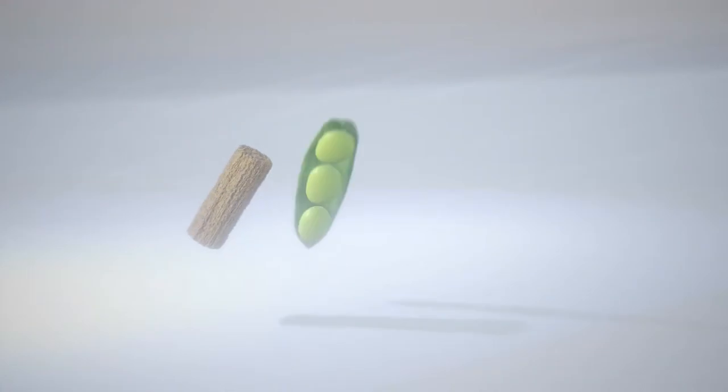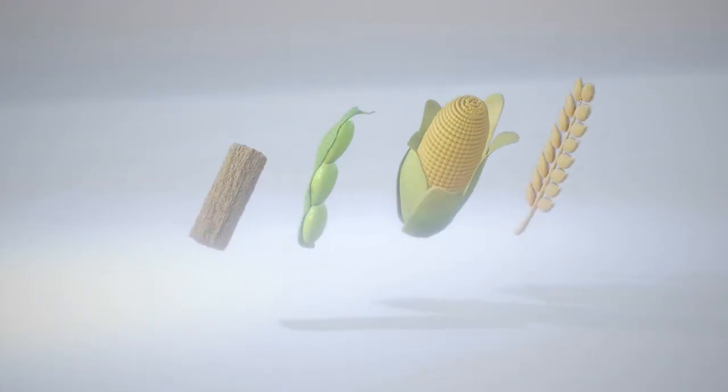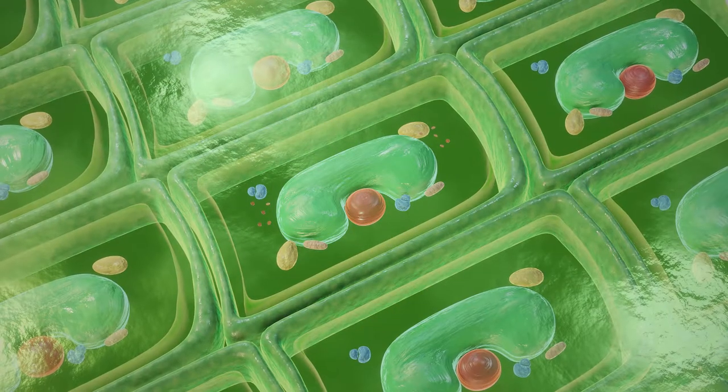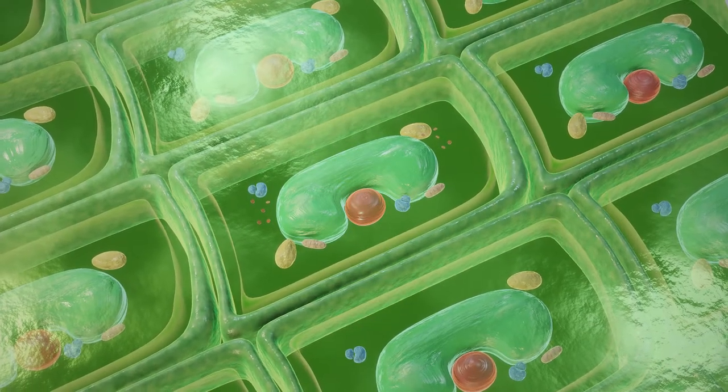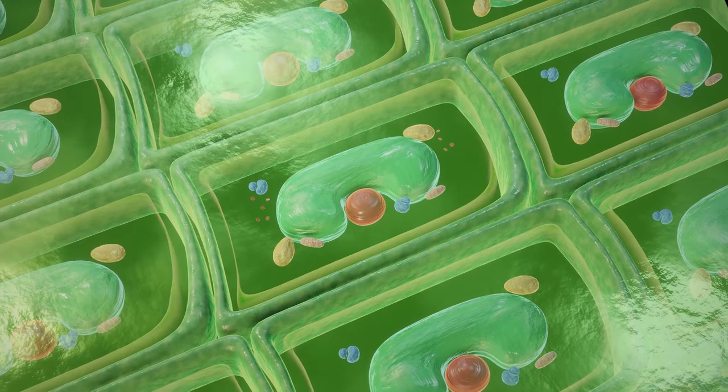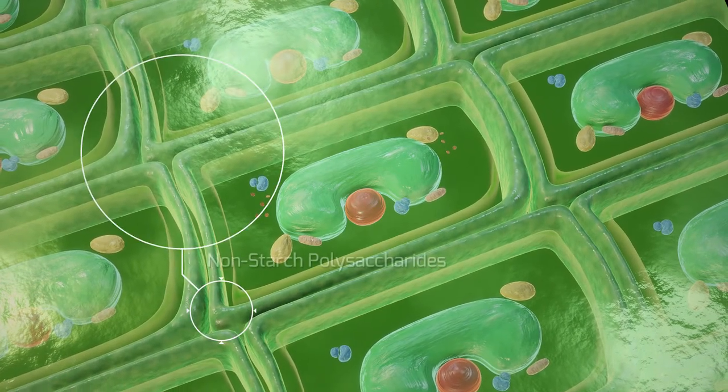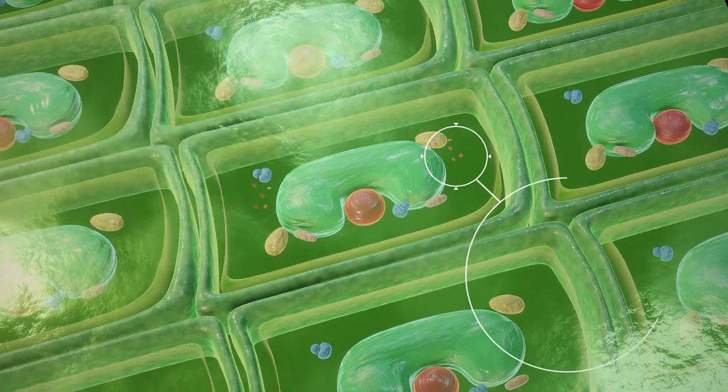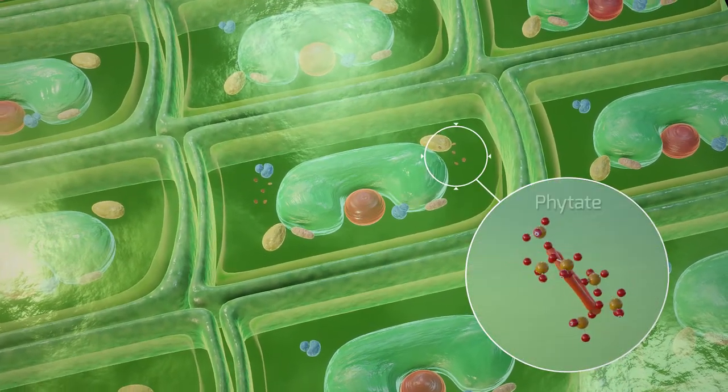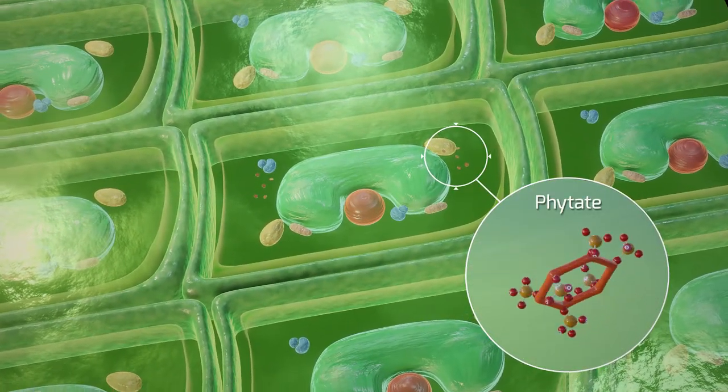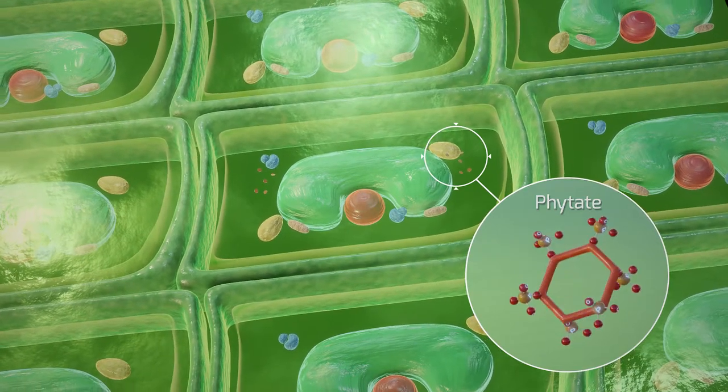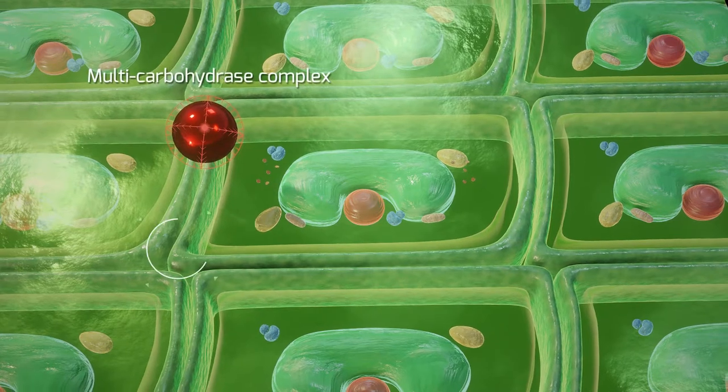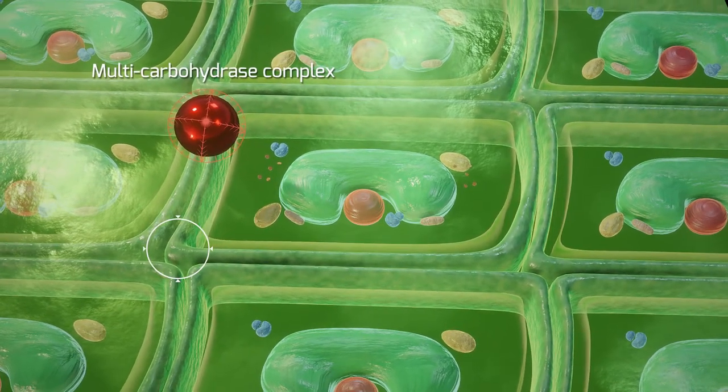Feed is a mixture of ingredients including cereals and protein meals. These raw plant materials bring high-value nutrients, but also some indigestible components such as non-starch polysaccharides and phytate. Non-starch polysaccharides constitute plant cell walls, while phytate is located within the cells. These are anti-nutritional factors as they reduce nutrient availability.